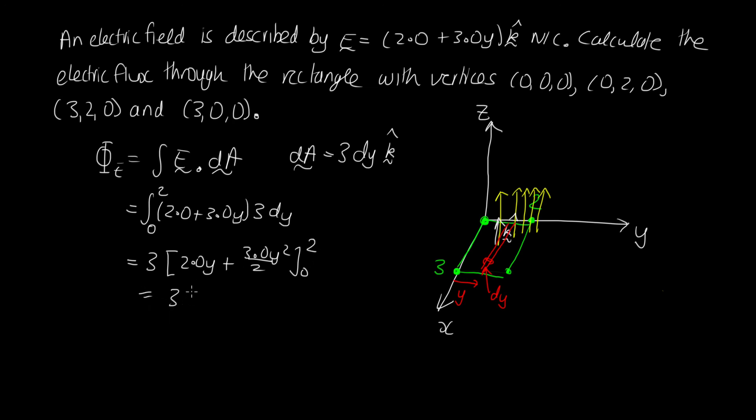So this is equal to 3 times (2 times 2 plus 3 times 2 squared, which is 4 divided by 2). And then when we put 0 in here, we get 0. So evaluating this, we get 30 newton meters squared per coulomb as the answer.